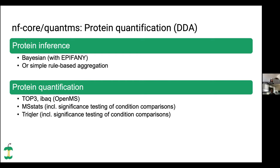When you have quantified the peptides, you are usually interested in the proteins they come from. We have two different inference techniques implemented: the Bayesian one with the OpenMS tool Epiphany, and also a simple rule-based aggregation of peptides to proteins. For quantification, we support common strategies: top three peptides per protein, iBAQ which normalizes by the length of the protein. We also have support for statistical post-processing tools like MS-Stats and Trigler, which have more elaborate statistical models and include significance testing between comparisons of samples, conditions, and contrasts.